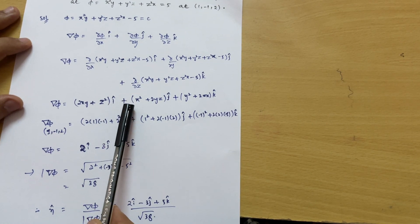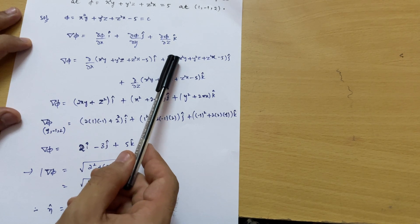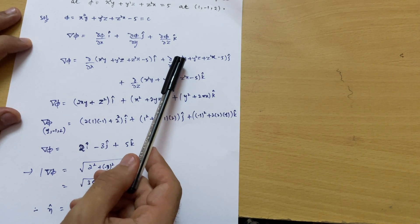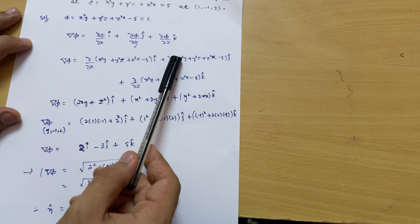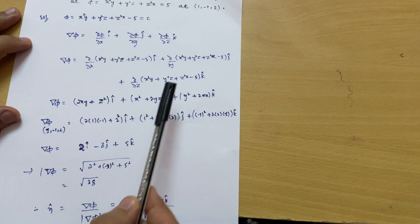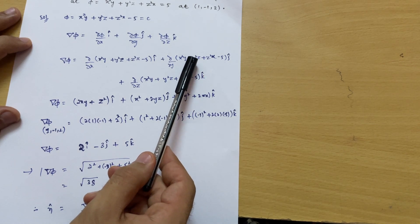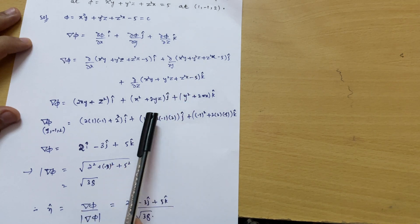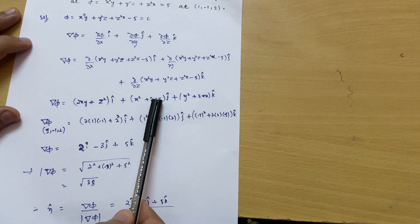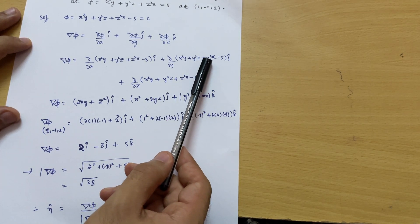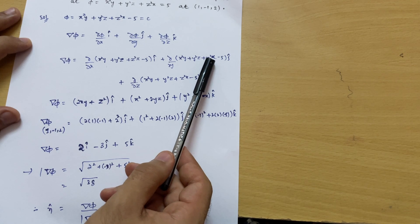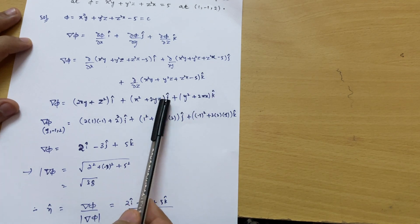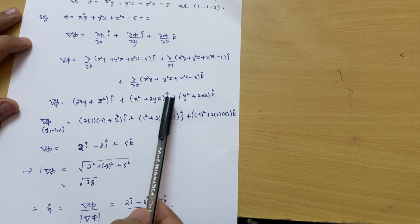For the ĵ component, differentiating with respect to y: the derivative of x²y gives x² (since ∂y/∂y = 1). For y²z, the derivative of y² is 2y, so we get 2yz. For z²x, there is no y term, so it gives 0. The y-component is (x² + 2yz) ĵ.